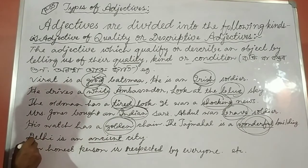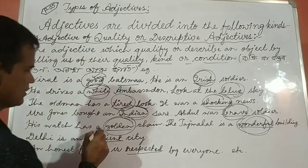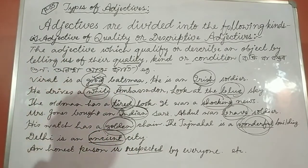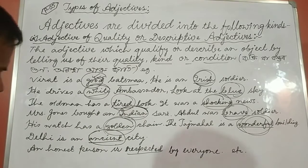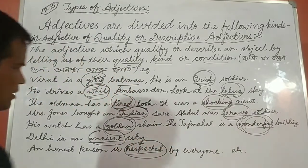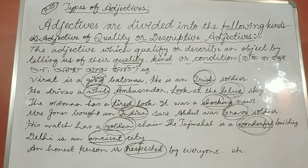Delhi is an inside city. An honest person is respected by everyone. So these are some examples of adjective of quality or descriptive adjective.